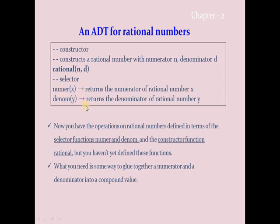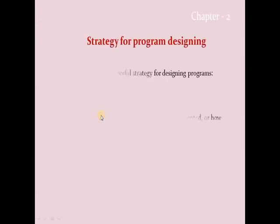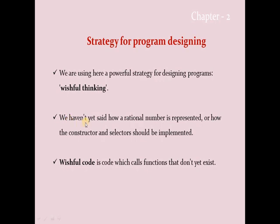Up to this level it is said to be abstract data type. This methodology of program designing is called wishful thinking — we have not yet set how a rational number is represented or how the constructor and selector should be implemented. Wishful thinking is a code that calls functions that do not yet exist, but will be defined later for completion.